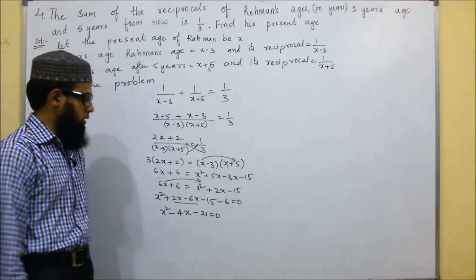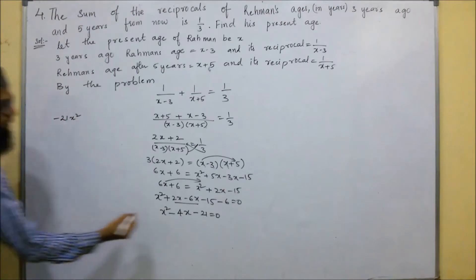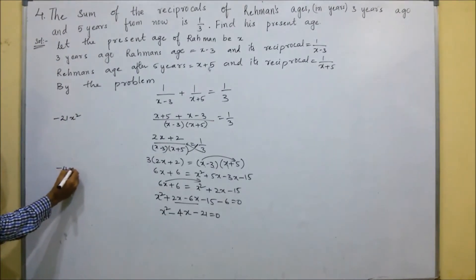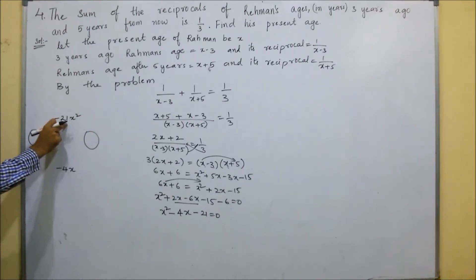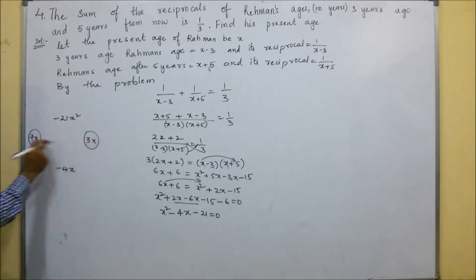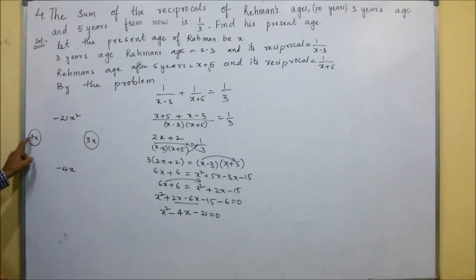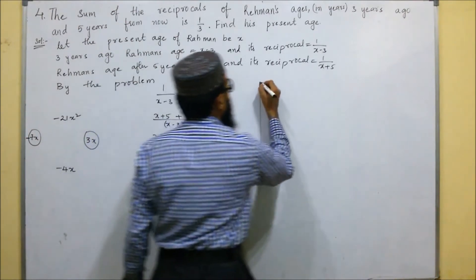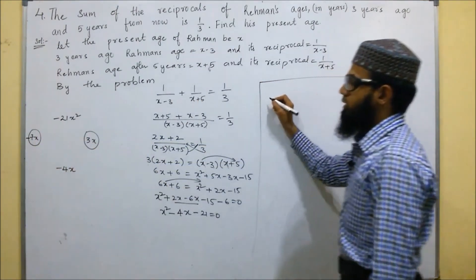This is a quadratic equation. We will find the roots. First, multiply the first and last terms: 1 times negative 21 gives minus 21. The middle term is minus 4X. We need two terms that multiply to minus 21 and add to minus 4: that is minus 7 and plus 3, since 7 times 3 is 21 and minus 7 plus 3 gives minus 4.